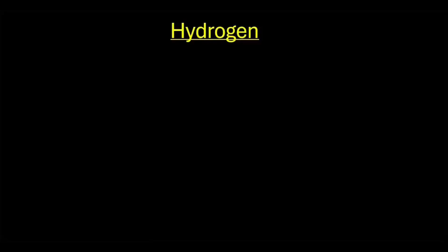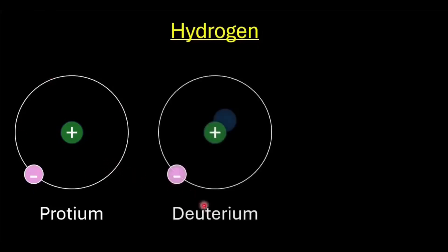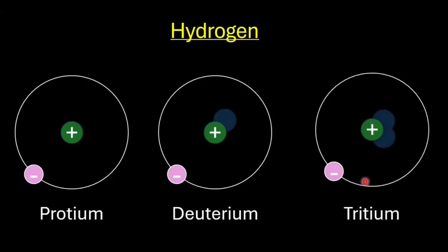Let's look at the simplest atom, Hydrogen. Hydrogen exists in three forms. Protium, with one proton and an electron revolving around it. Deuterium, with one proton, one neutron and an electron revolving around it. And finally, Tritium, with one proton and two neutrons present in the nucleus and the electron revolving around them.